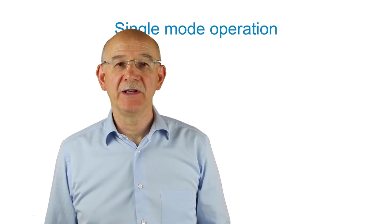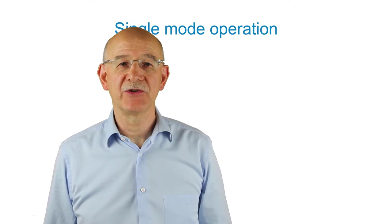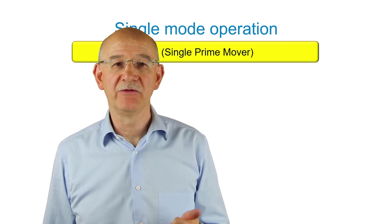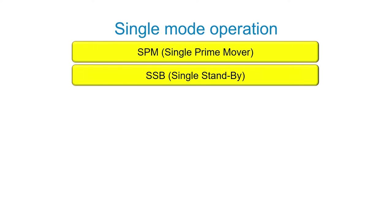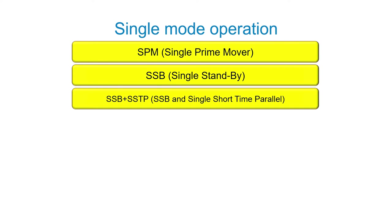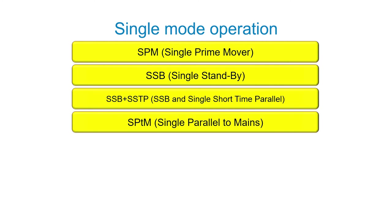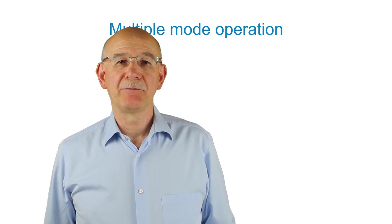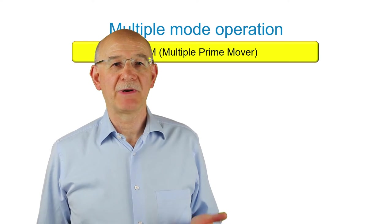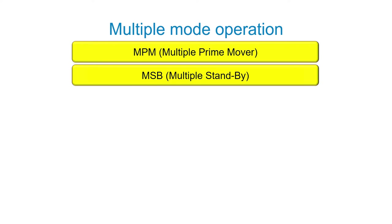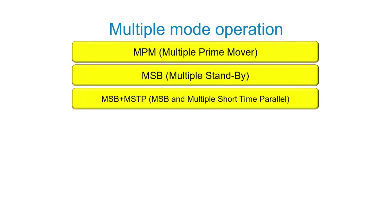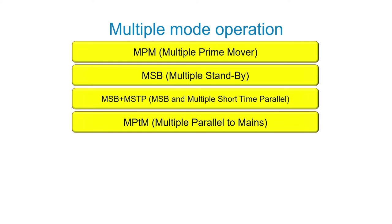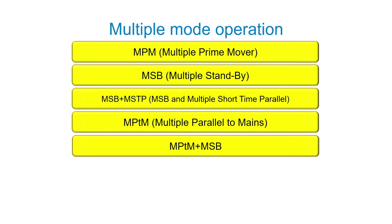The controller manages the following single operation modes: single prime mover, single standby, single standby and single short time parallel, single parallel to mains, and single parallel to mains and single standby. For multiple operating modes: multiple prime mover, multiple standby, multiple standby and multiple short time parallel, multiple parallel to mains, and multiple parallel to mains and multiple standby.